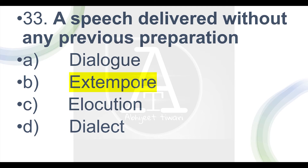Option C is 'elocution' — elocution is the skill of clear and expressive speech. Option D is 'dialect' — dialect means the form of language spoken in a particular region. So for a speech without preparation, the answer remains extemporaneous.